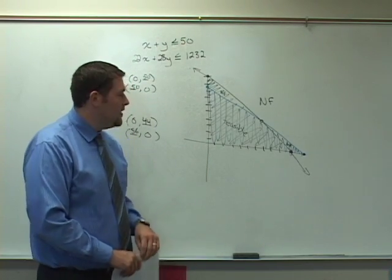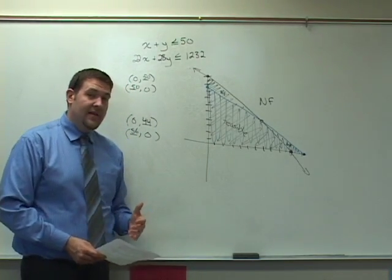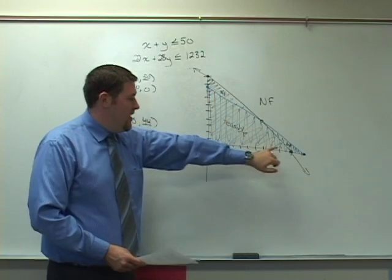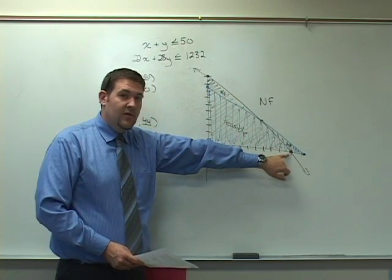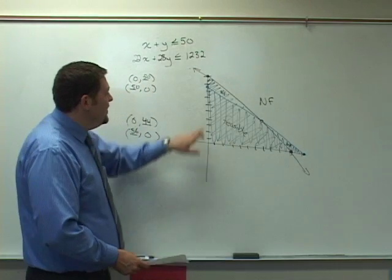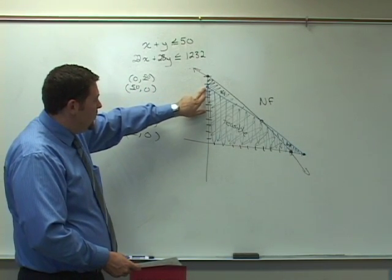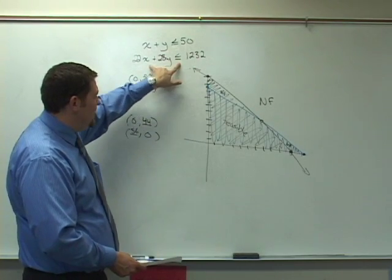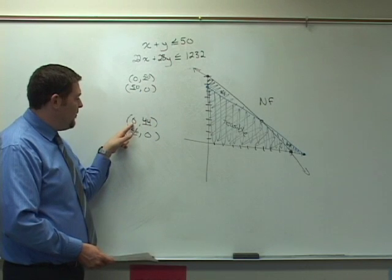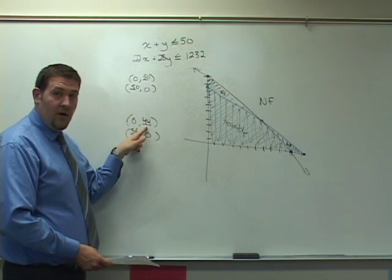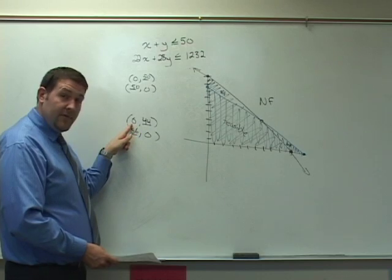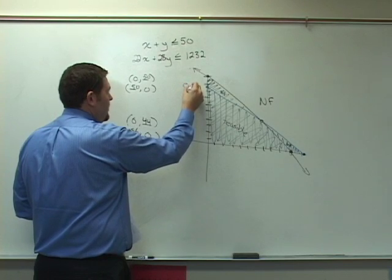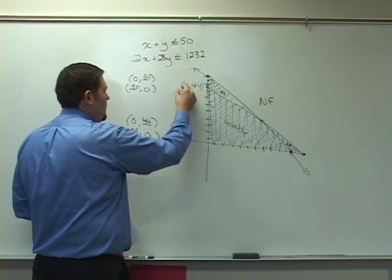So we're going to label those right now. Now thankfully, the way we graphed these, we graphed using the intercepts. So we already know where this intercept is and where that intercept is. We do have to be careful when we use the correct line or the correct graph here. This doubly shaded region was the one done in blue, which is the one that deals with the second inequality. So this is the y-intercept of the second inequality. Our work is still here, showing that when x was 0, we found out that y was 44. When we had 0 apple trees, we had 44 peach trees. So we're going to go ahead and label that one as 0, 44. That's our first label.